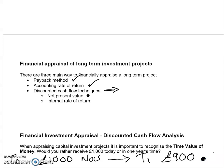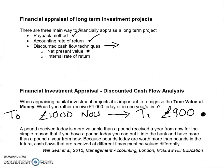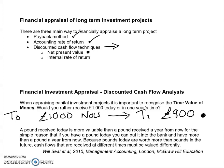What we've done there is discounted the £1,000 in a year's time using a cost of capital. The cost of capital is quite complicated, and you will learn a lot more about it as you go through your studies. As Will Seale puts it: a pound today is more valuable than a pound received a year from now, because if you have a pound today you can put it into the bank and have more than a pound a year from now. Because pounds today are worth more than pounds in the future, cash flows received at different times must be valued differently.